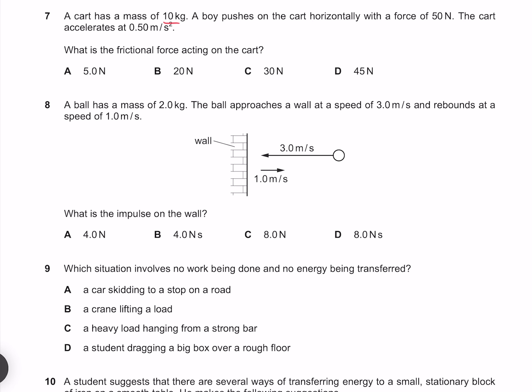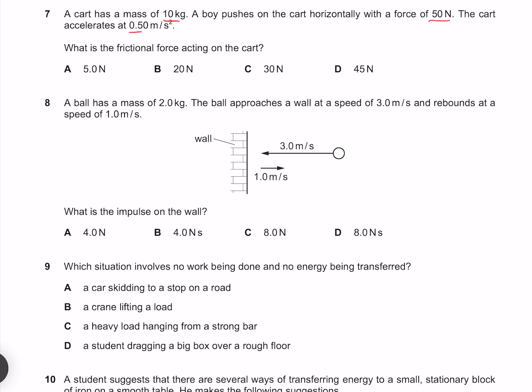A cart has a mass of 10 kilograms. A boy pushes on the cart horizontally with a force of 50 newtons. The cart accelerates at 0.5 meters per second per second. What is the frictional force acting on the cart? And so our acceleration is produced by our net force. Our net force is going to be our force of 50 minus our force of friction, which is what we're trying to find. Rearranging this equation, our friction force is going to be 50 minus our net force. To find our net force, we know that our net force is going to equal our mass times the acceleration. We know that the mass is 10 and the acceleration is 0.5. Therefore, our net force must be 5 newtons, which means that our friction force is 50 minus 5, which gives us 45 newtons, meaning that our answer is D.